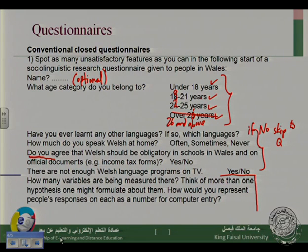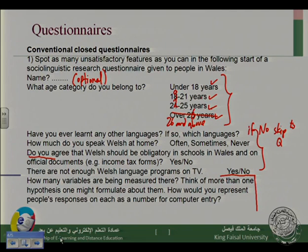Another problem with this question is called having a double question — you have two questions in one. 'Do you agree using Welsh in schools in Wales and on official documents?' Maybe they agree in one but not the other. They would agree to use it in schools but will not agree to use it in official documents, or vice versa. So avoid using double questions. Here you have the first question, and here the second: using them in official documents.